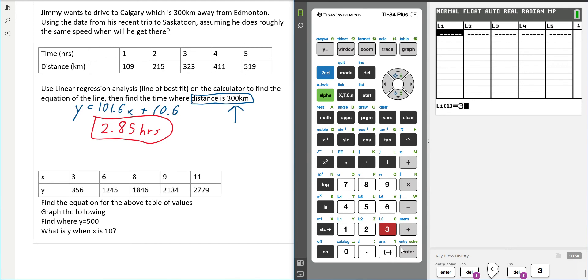So 3 enter, 6 enter, 8 enter, 9 enter, 11 enter, to the right. And now 356 enter, 1245 enter, 1846 enter, 2134 enter, 2779 enter. Okay, so now we have some data.